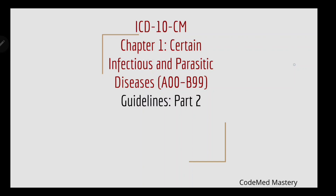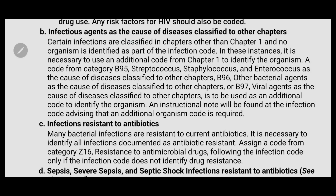Let's start with infectious agents as the cause of disease classified to other chapters. Certain infections are classified in chapters other than Chapter 1, and no organism is identified as part of the infection code. In such cases, it is necessary to use an additional code from Chapter 1 to identify the organism. A code from category B95 (streptococcus, staphylococcus, enterococcus), B96 (other bacterial agent), or B97 (viral agents) should be used as an additional code to identify the organism.